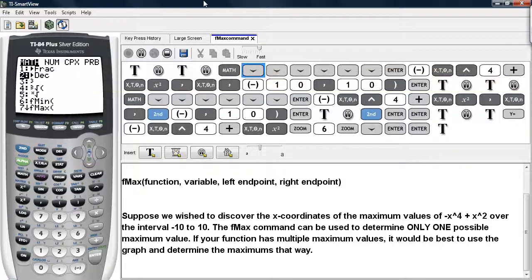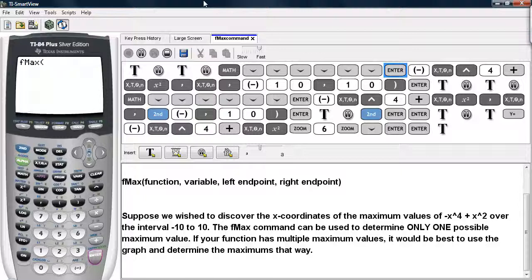So we select math, we scroll down until we have fmax, we go ahead and type in our function, negative x to the fourth plus x squared.